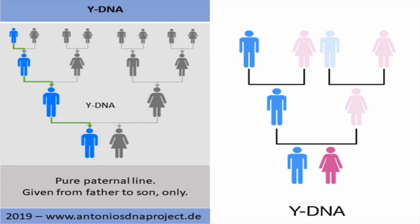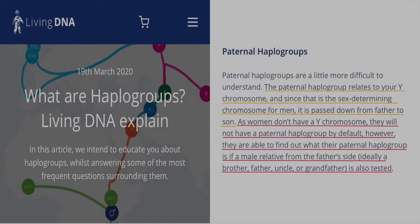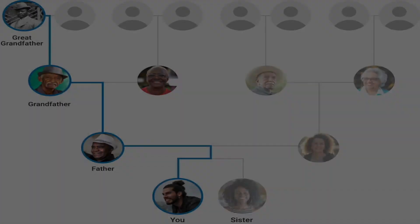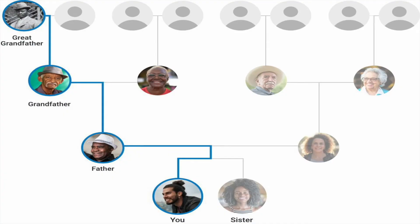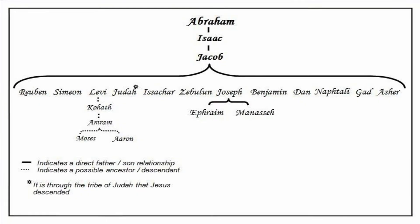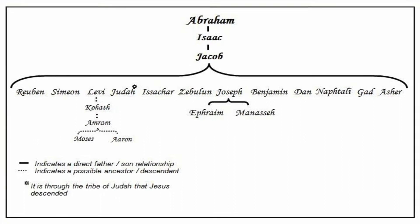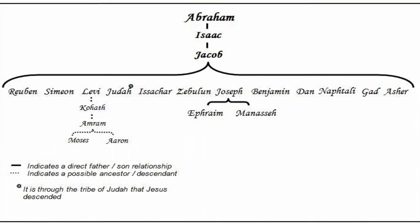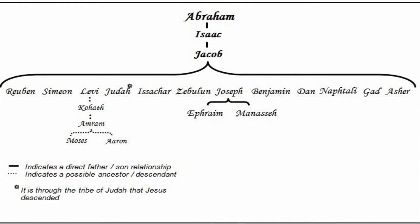What is a Y-DNA haplogroup? A Y chromosome is passed down from father to son. According to LivingDNA.com, titled 'What Are Haplogroups,' it reads: the paternal haplogroup relates to your Y chromosome, and since that is a sex-determining chromosome for men, it is passed down from father to son. This is the perfect tool to use when trying to determine paternal lineages. Therefore, Abraham's Y chromosome would have been passed down to his son Isaac, to his grandson Jacob — whose name was changed to Israel — and then to the Israelites themselves, who paternally descend from Abraham and carry his Y-DNA haplogroup.